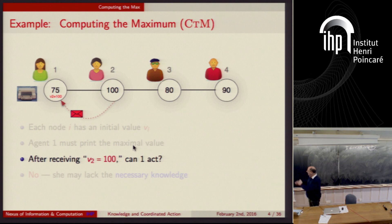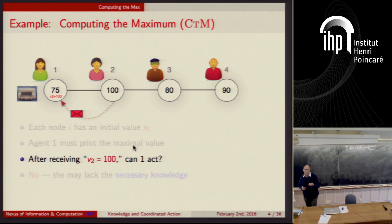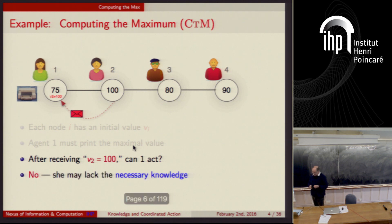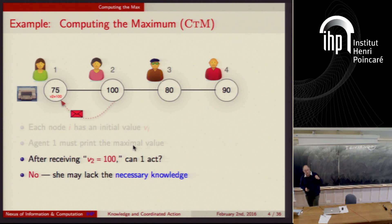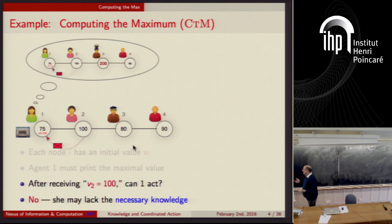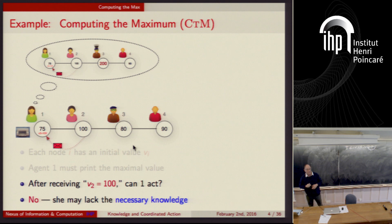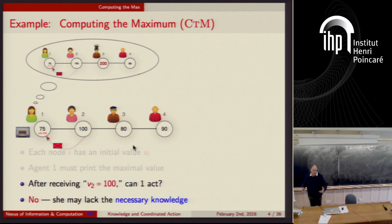Generally, we would say no. If we assume that every process only has initially access to its own value, then receiving the maximum value is not enough in order to print it. Because Alice doesn't know what other values may be in the system — even though all the other values are smaller and 100 is the maximum — there's another scenario Alice can consider possible, in which process three has a larger value. So even though she received the maximum, she can't print it because she doesn't know that it's the maximum.